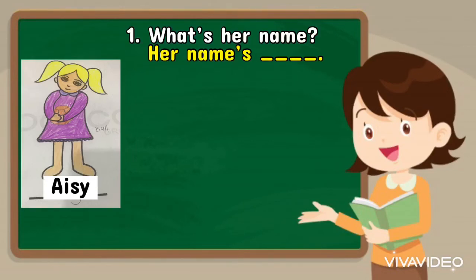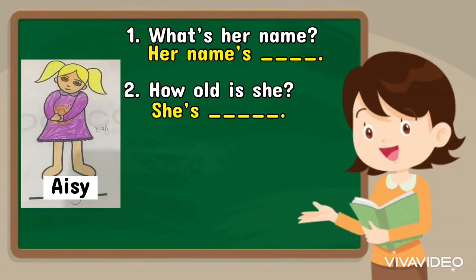Very good. Number 2: How old is she? She is 7. Please repeat after me: She is 7.